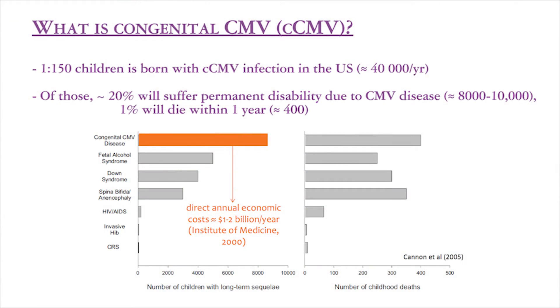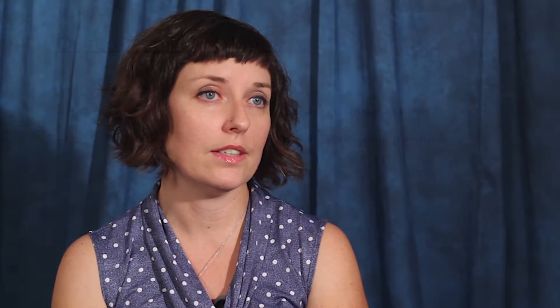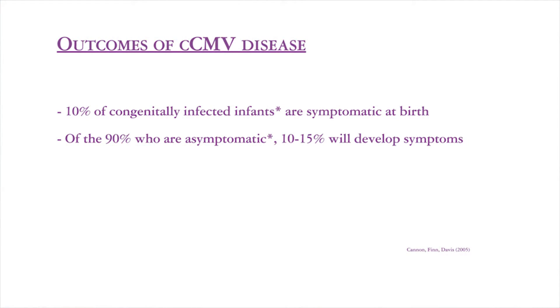Of those 40,000 children per year born with congenital CMV, approximately 10% of babies are born symptomatic, presenting at birth with the symptoms of a congenital CMV infection. Of the 90% of children who are born congenitally infected but asymptomatic — presenting no sequelae at birth — 10 to 15% of those children will actually go on to develop long-term clinical sequelae.